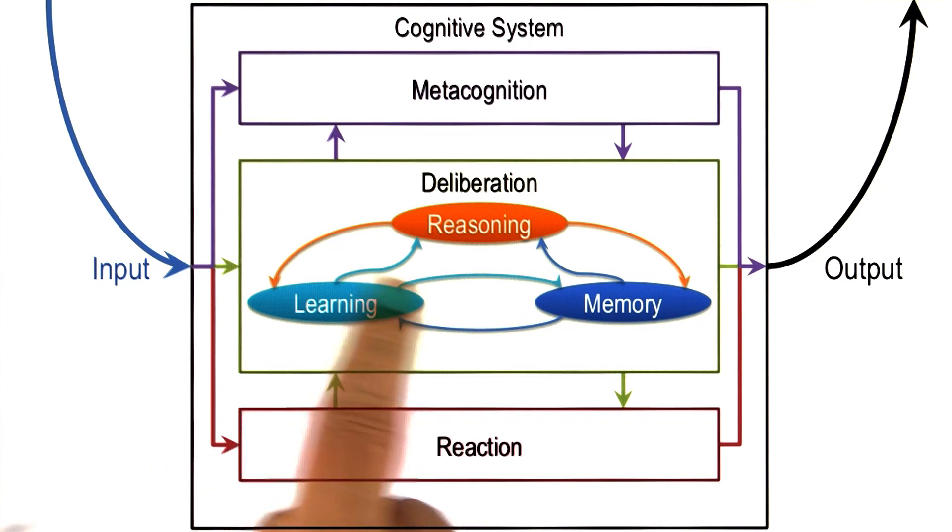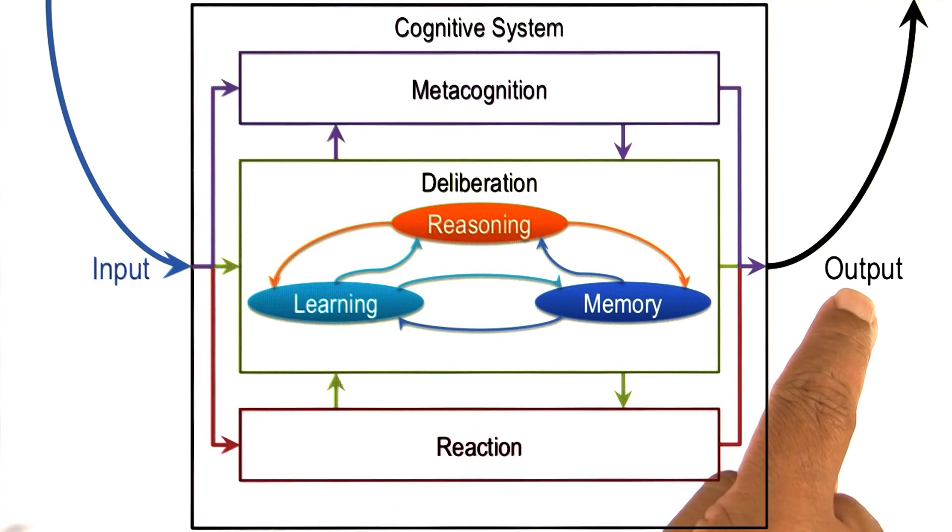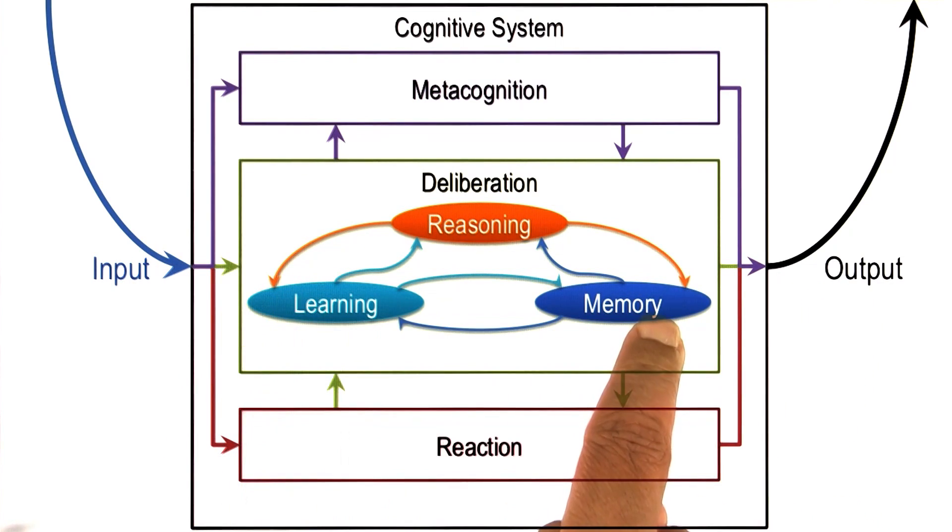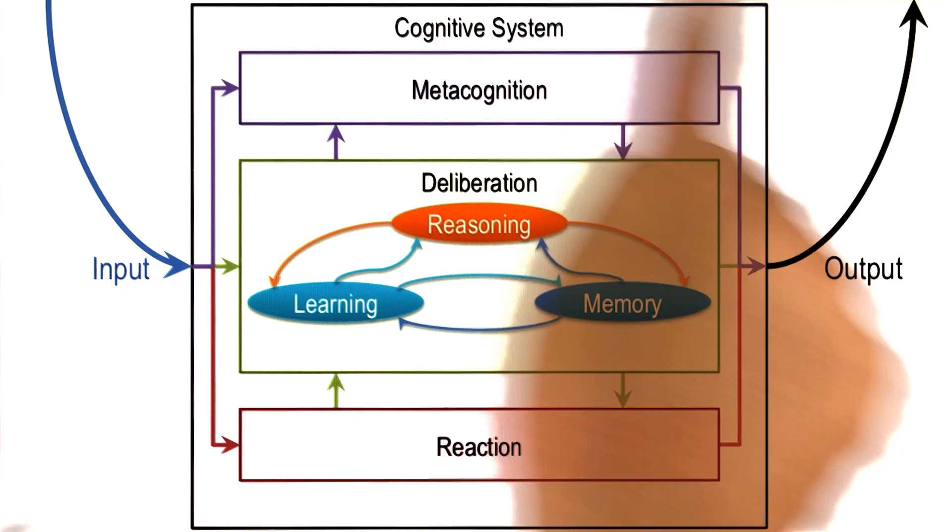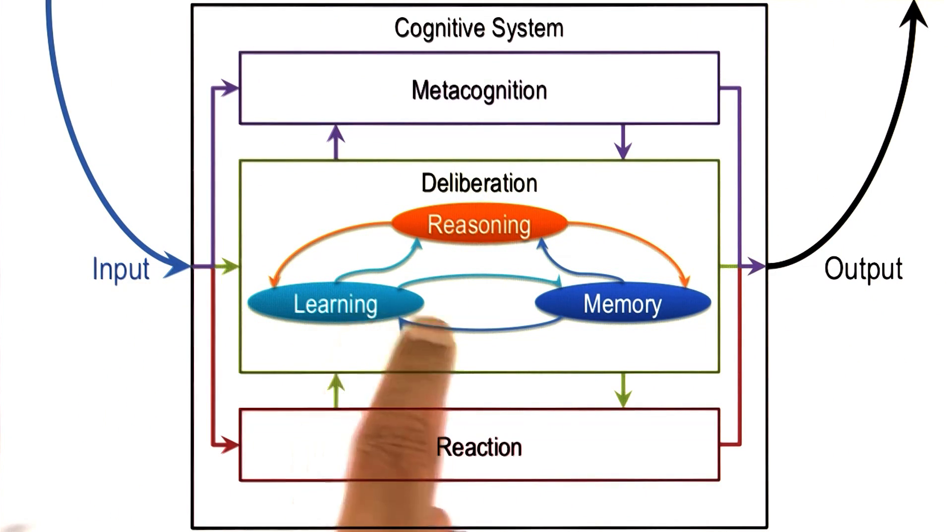This figure suggests that we not only learn so that we can do action selection, but additionally, as we do action selection and we get feedback from the world, it informs the learning.